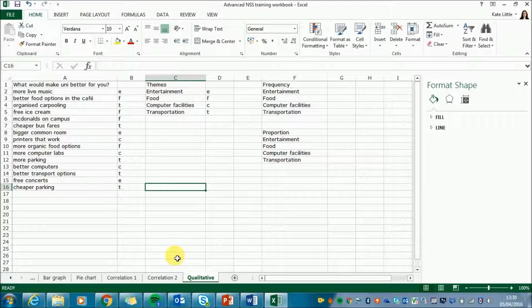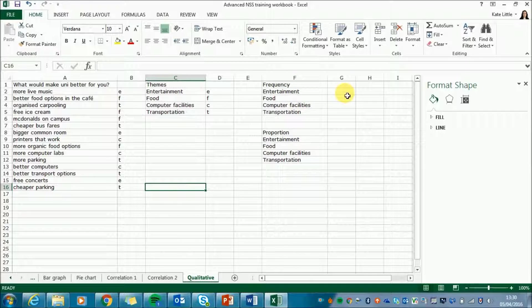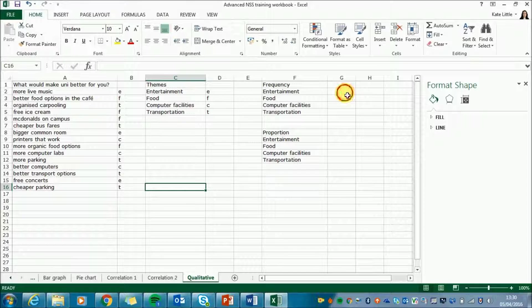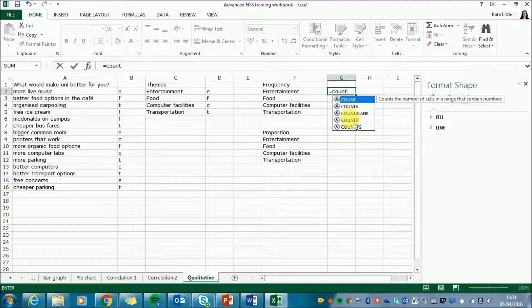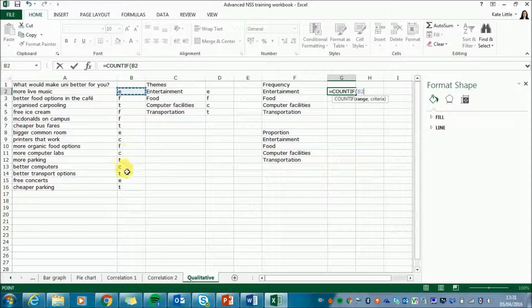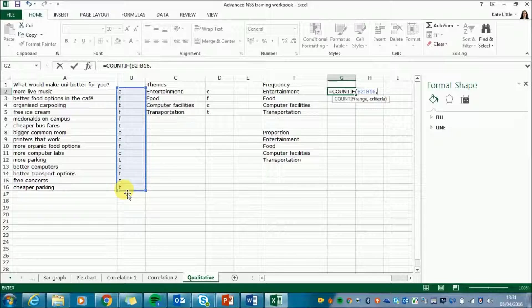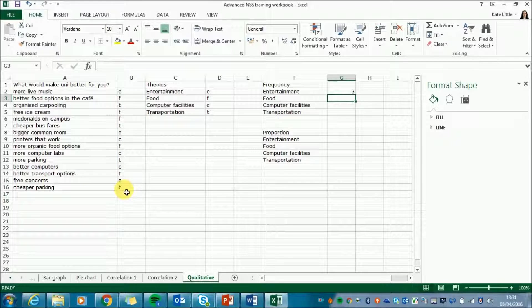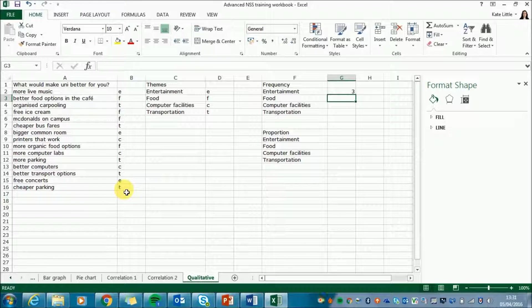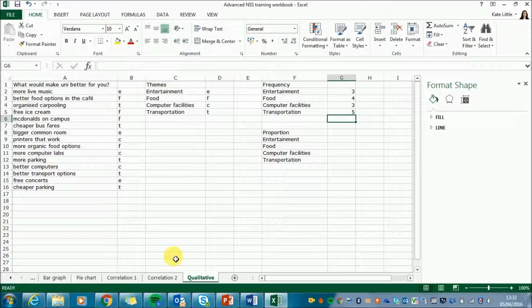Ok now they're coded we're going to count how many there are in each category. So you'll see over here we've got a frequency table. We're going to use the countif function to tell us how many comments are in each section quite quickly and easily. So I'll click in the box next to entertainment and type equals and find countif and then select my range which is all our codes we've just inputted. And we want to say what the criteria are so that is E and we put it in quotation marks because it's not a number. So there we go there are three in the entertainment category. I'm going to repeat this for each of the other categories.